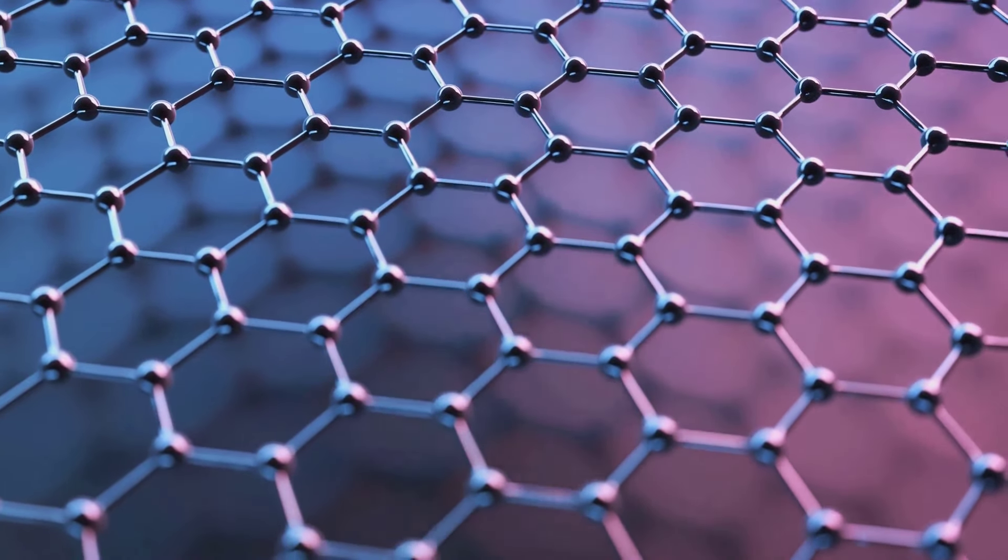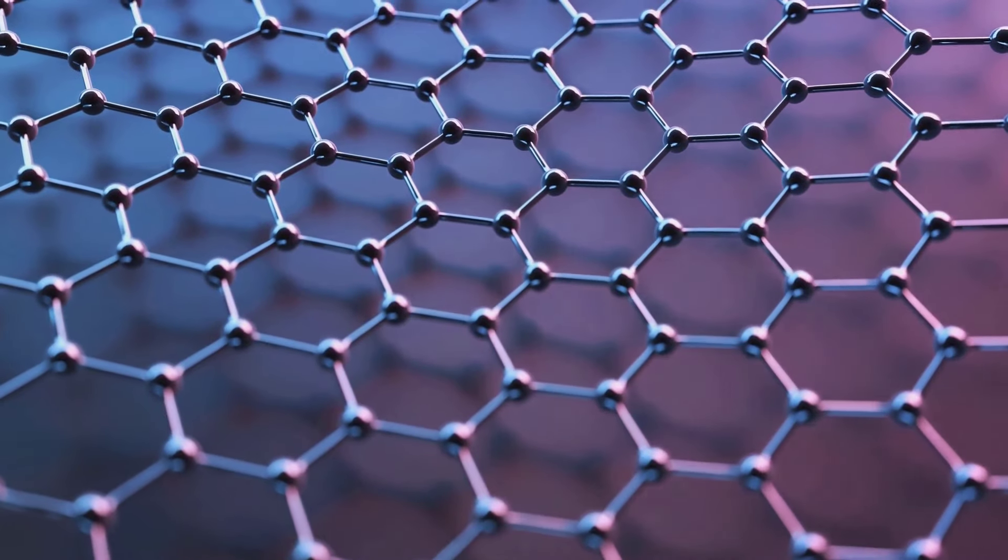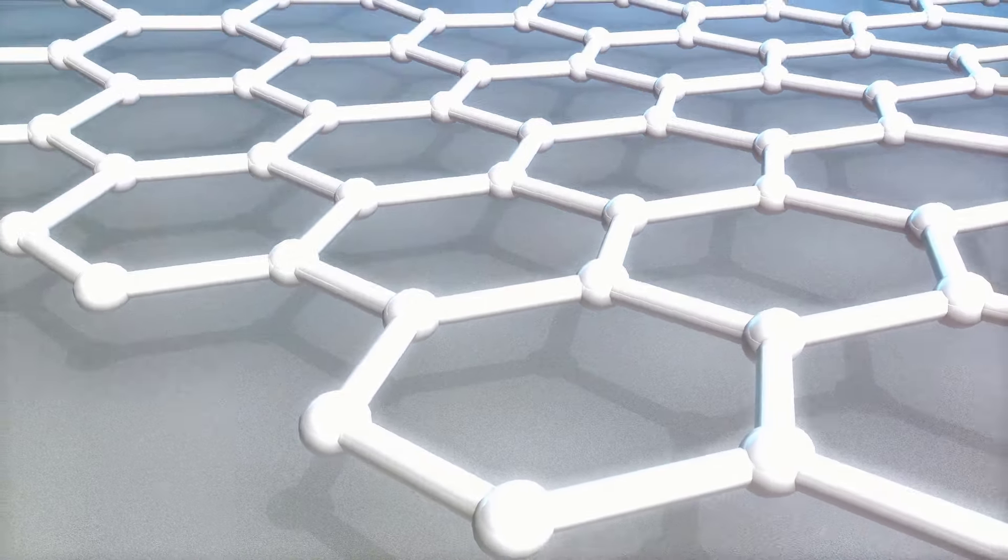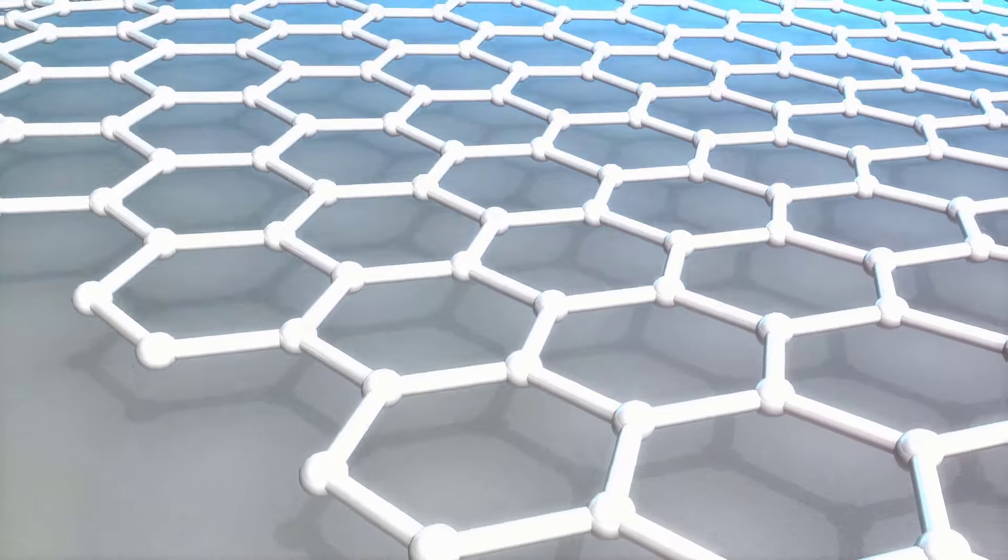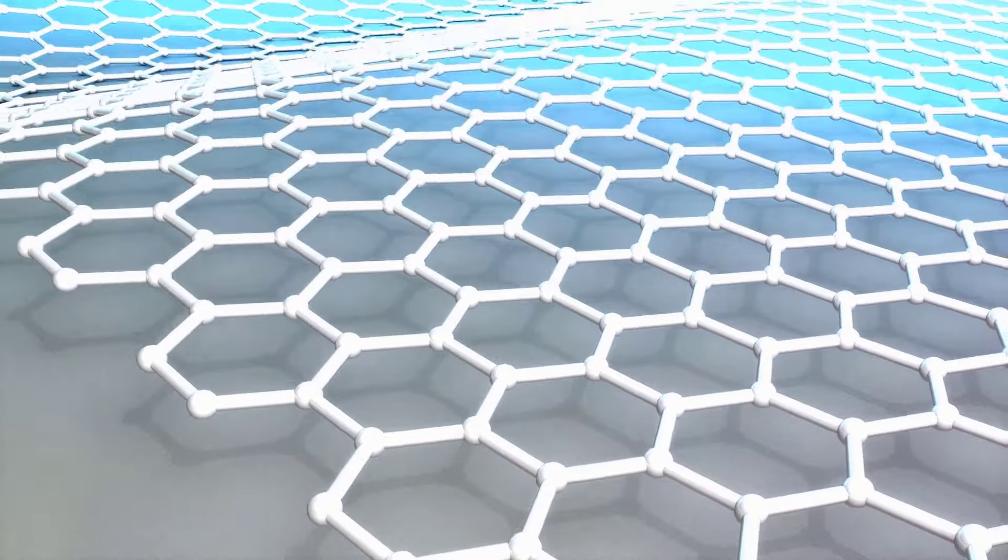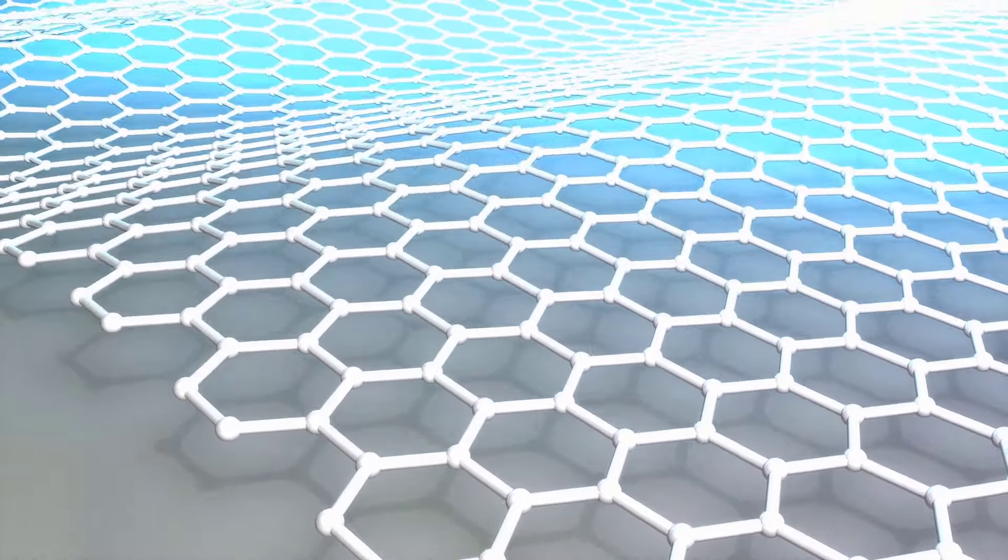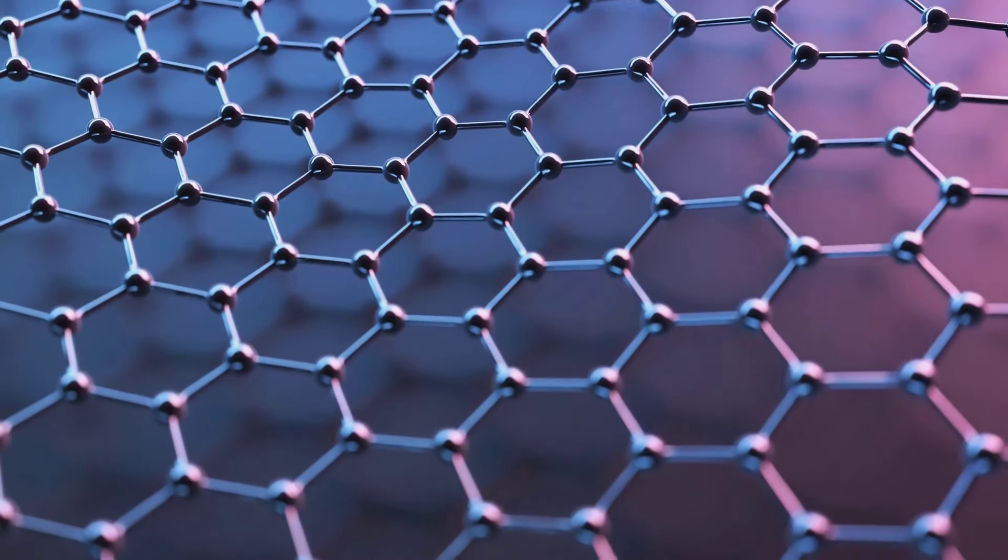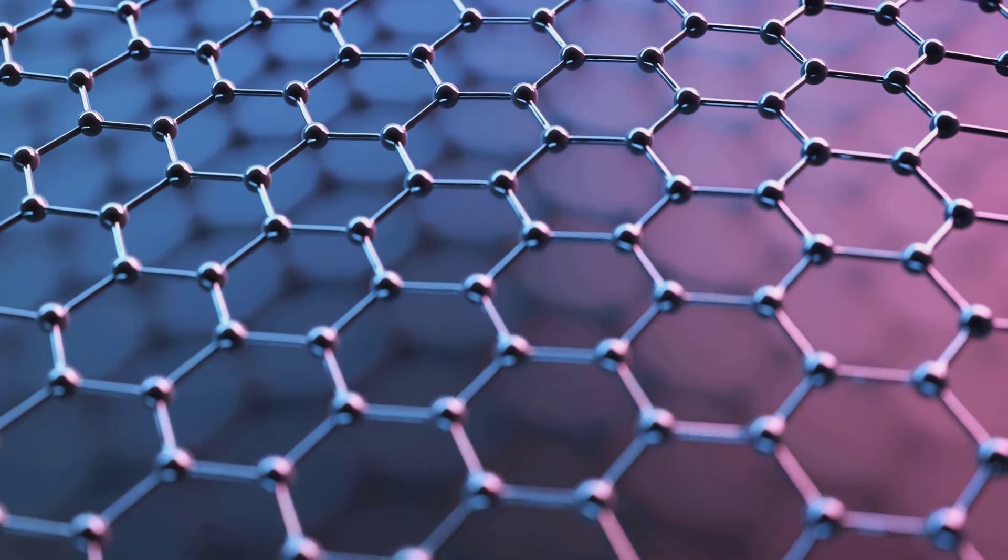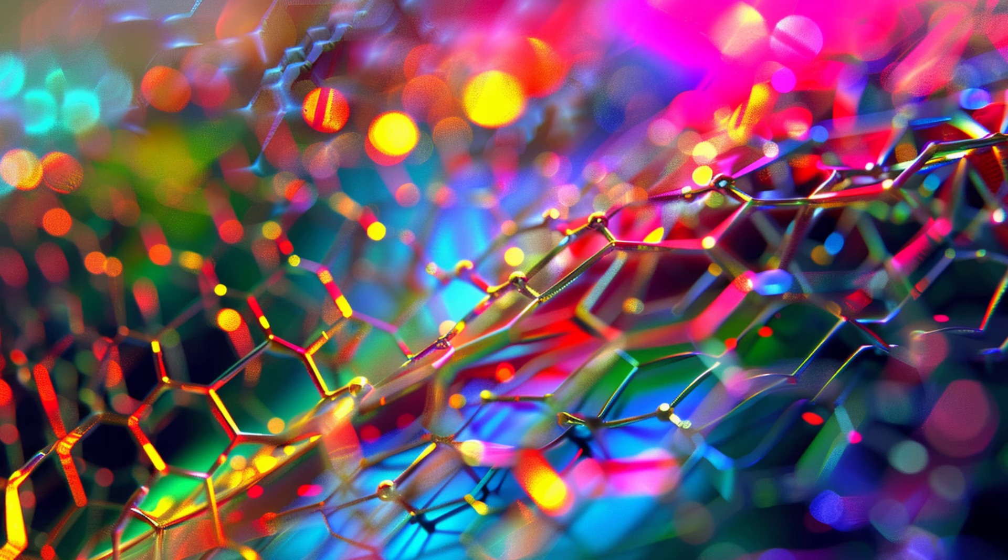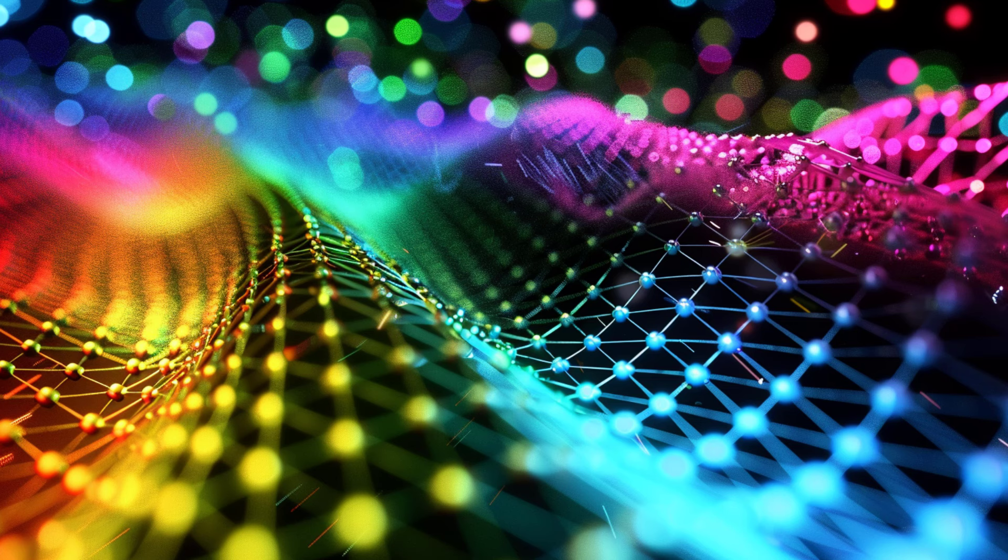What makes graphene so special is its unique set of properties. It's stronger than steel, yet incredibly lightweight and flexible. It conducts heat better than any other known material, and is a superb electrical conductor. Its transparency and ability to absorb a high percentage of light also make it a promising material for photovoltaic applications.